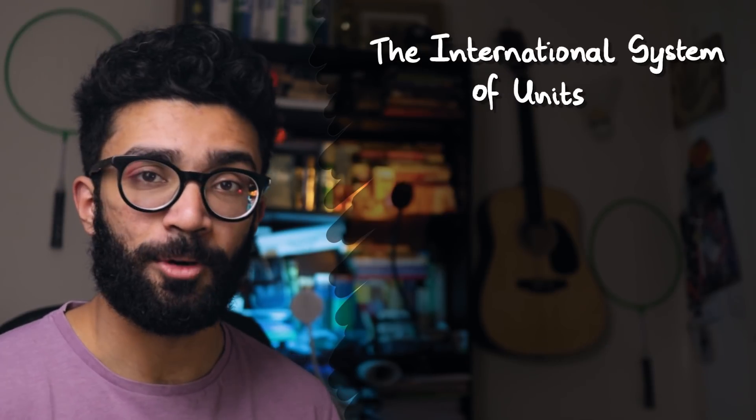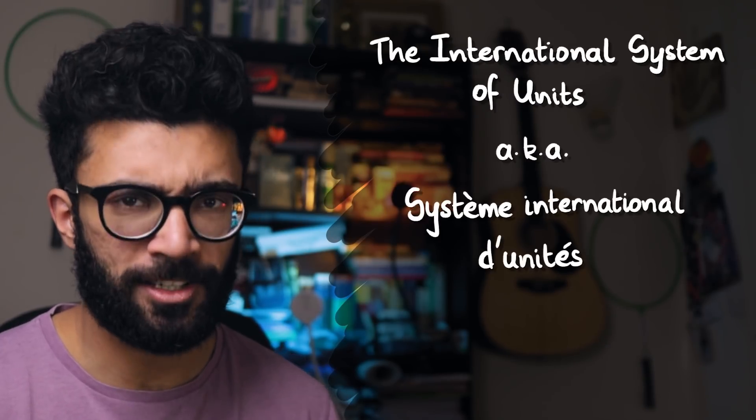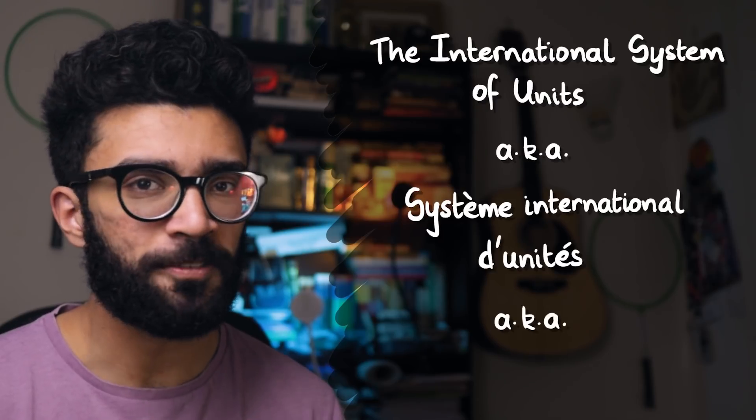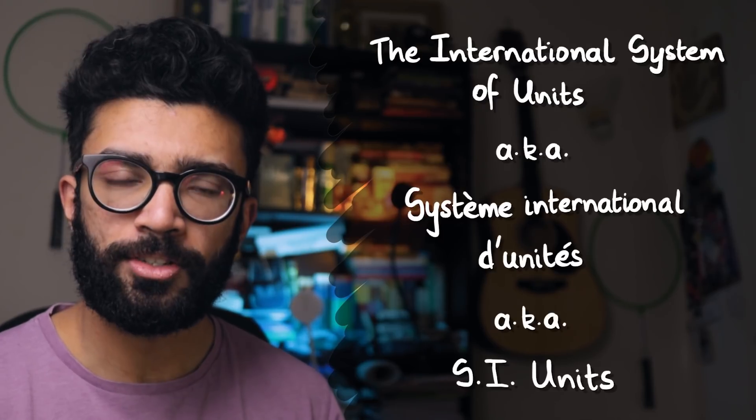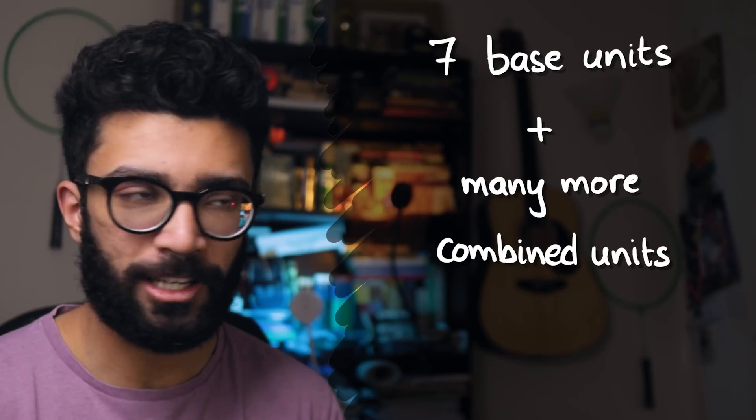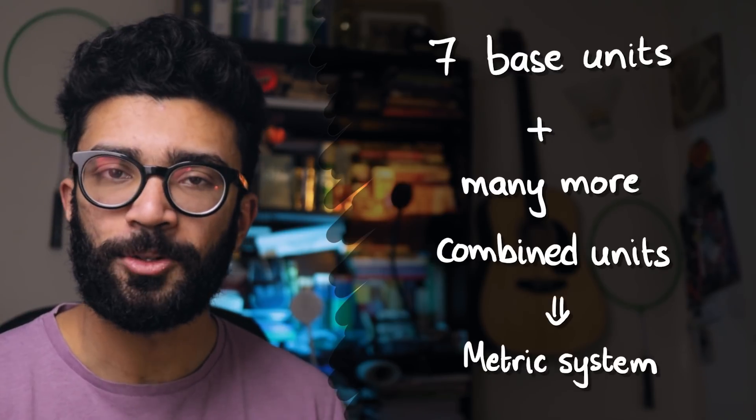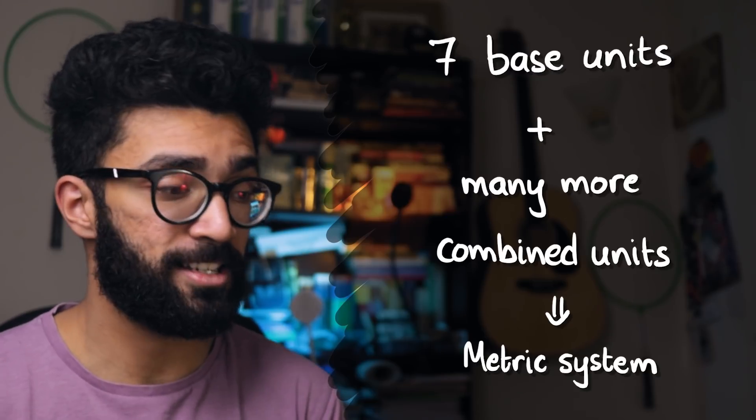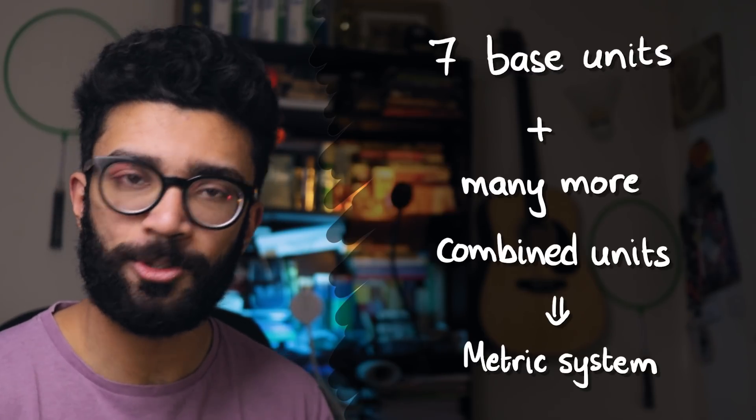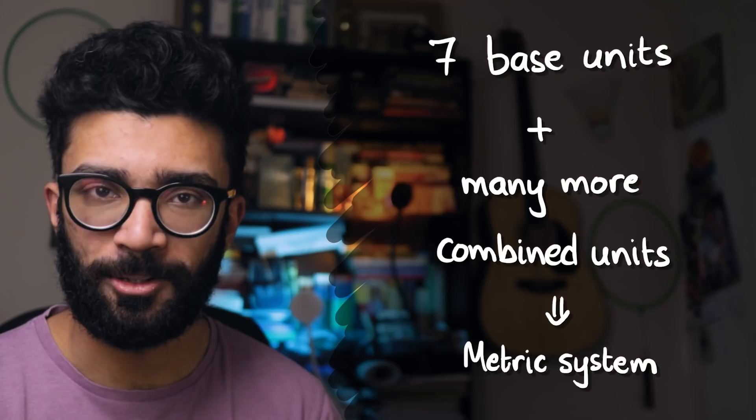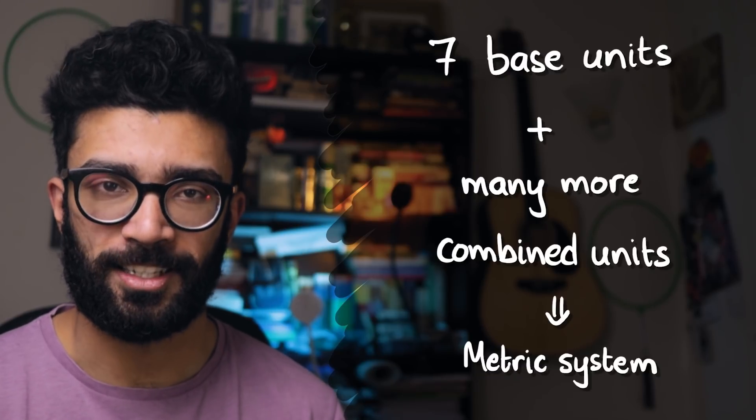The International System of Units, or Système Internationale d'Unité, how's my French, often shortened to SI units, consists of seven basic units and lots more combined ones, and these form the basis of the metric system. Other unit systems exist, but SI systems are probably the most commonly used in physics and also the ones I am familiar with, so those are the ones we're going to be discussing today.